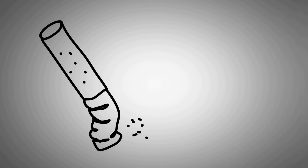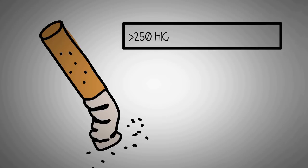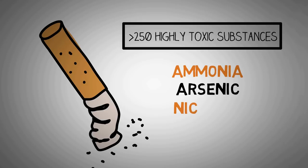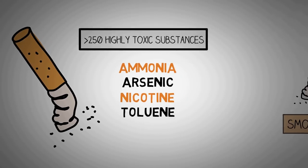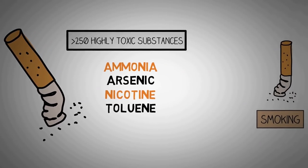If the controlled consumption of some alcoholic beverages can be accepted, in the case of tobacco there is no limit allowed. Cigarettes contain more than 250 highly harmful substances, some of which are even considered poisonous, such as ammonia, arsenic, nicotine, and toluene. The human body is not made to process chemicals as potent and devastating as those contained in cigarettes.